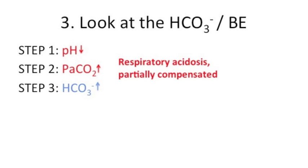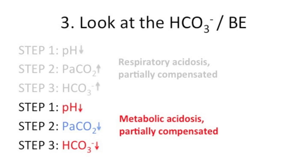So this is a partially compensated respiratory acidosis — only partial because if it were full, then the pH would of course be normal. In another example where we've diagnosed a likely metabolic acidosis, in Step 3 we can now confirm it as a metabolic acidosis, as the bicarb moves in the same direction as the pH. Now glance at the CO2 again — since it is moving in the opposite direction to the pH, we can say there is partial compensation. So this is a metabolic acidosis that is partially compensated.